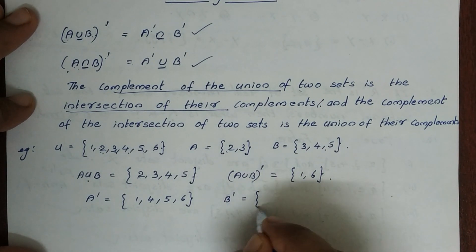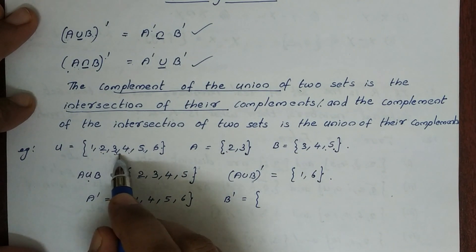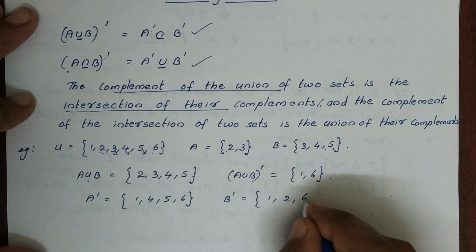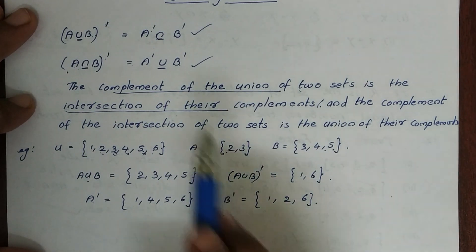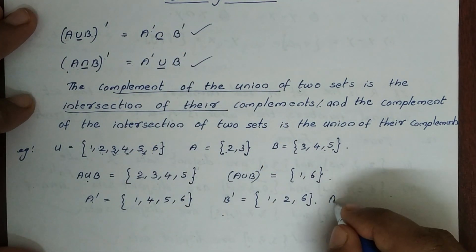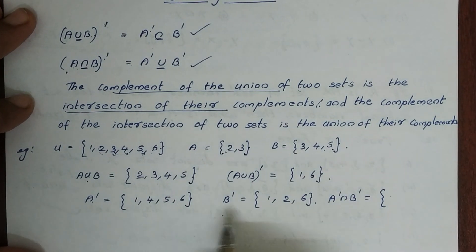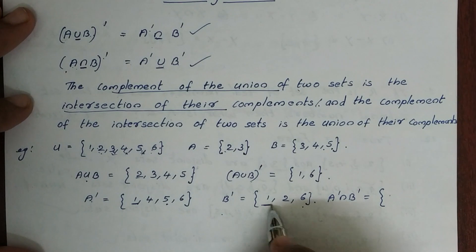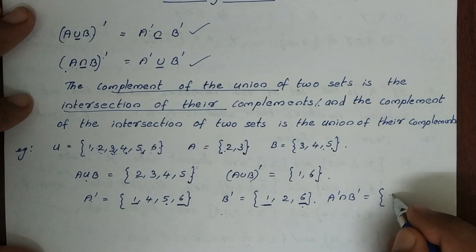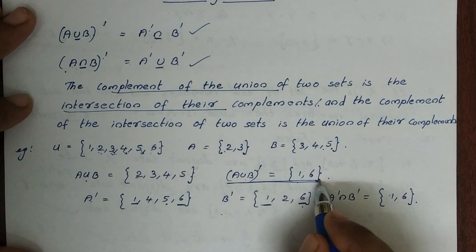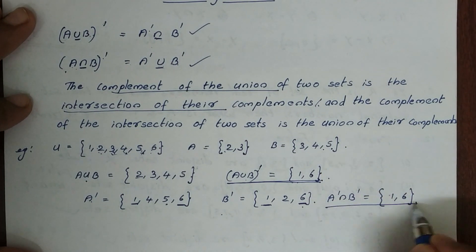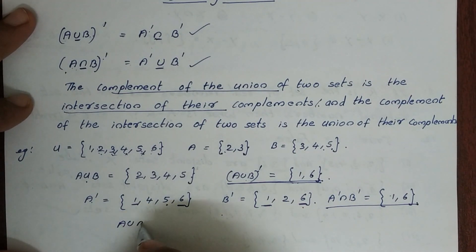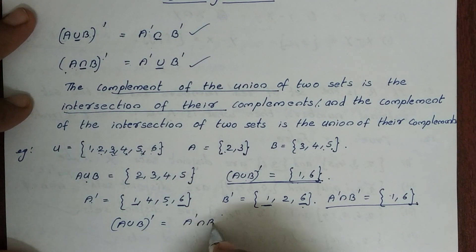B complement: in B you have elements {3, 4, 5}, so B complement has {1, 2, 6}. A complement intersection B complement — we choose the common elements — gives {1, 6}. And A union B complement is also {1, 6}. So A union B complement equals A complement intersection B complement.